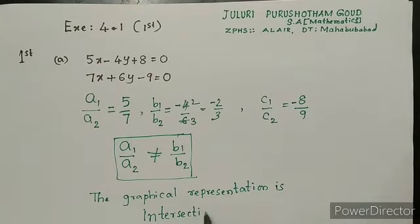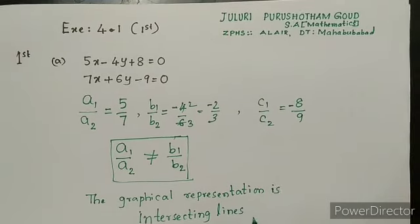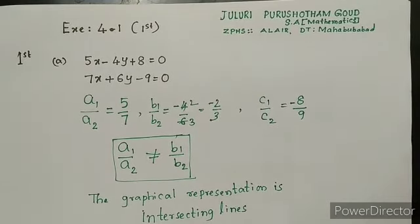Intersecting lines. Is it clear for all? Is asking whether they are intersecting lines or coincident lines or is asking parallel lines.